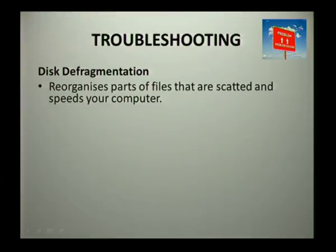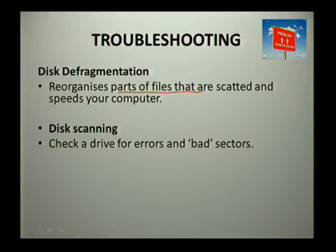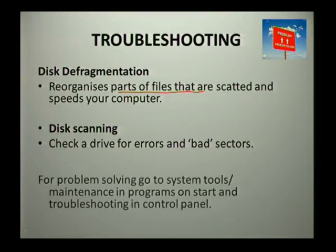Other troubleshooting examples include disk defragmentation. Disk defragmentation recognizes parts of files that were scattered across the hard drive due to saving, installing, deleting, and uninstalling files. The disk defragmenter brings these parts together, allowing faster access to those files. We also have disk scanning, which checks a drive for errors and bad sectors — for example, if some systems or applications were not responding properly.